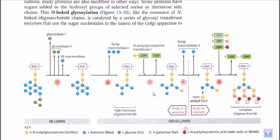Think of the Golgi as a manufacturing machine — whatever type of product we need to generate is our goal. Just as a car manufacturer produces different types of cars in different structures and with different features — sometimes producing a Maruti, sometimes a Sumo, sometimes an Ambassador — in the same way, the Golgi is producing various different types of proteins by using enzymes like Golgi mannosidase to cleave mannoses, attaching mannose residues via different bond formations, and attaching N-acetylglucosamine via N-acetylglucosamine transferase.